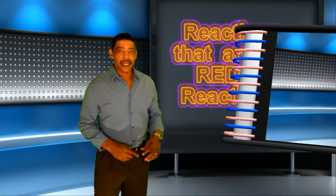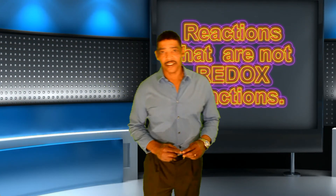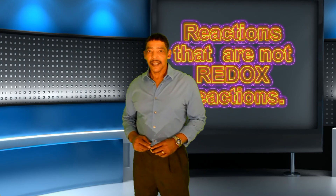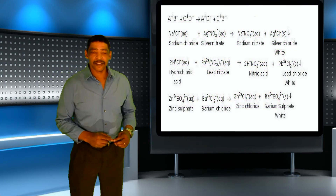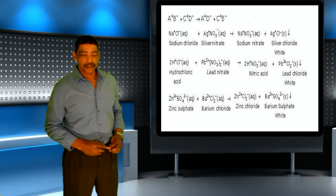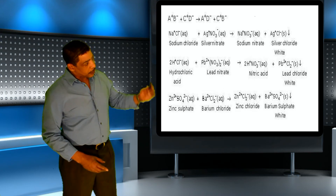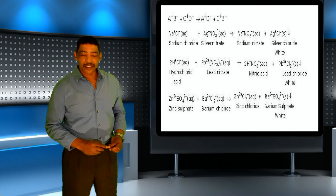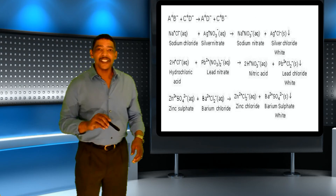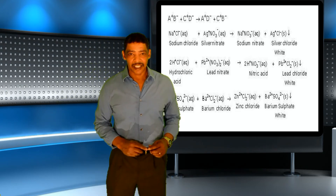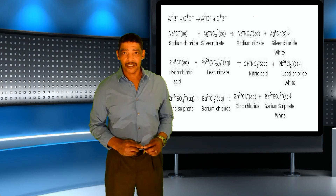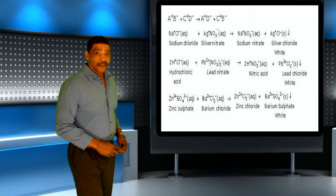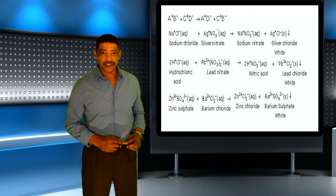One type of reaction that is definitely not a redox reaction is a precipitation reaction. Consider examples of precipitation reactions where the oxidation states of all species remain the same. Although a precipitate is formed in each case, the oxidation states do not change, so these reactions are definitely not redox reactions.